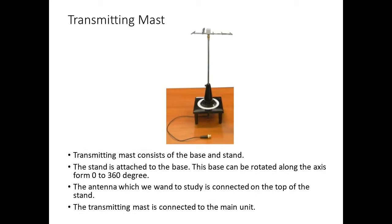Transmitting mast. The transmitting mast consists of the base and a stand. The stand is attached to the base. This base can be rotated along the axis from 0 degrees to 360 degrees. The antenna which we want to study is connected on the top of the stand. The transmitting mast is connected to the main unit.